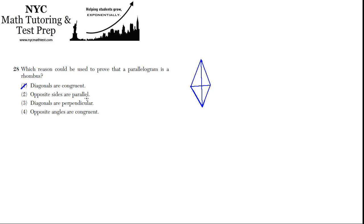What kind of a rhombus has congruent diagonals? A square. A square is a very special rhombus where the diagonals are equal. But not all rhombuses are squares, so that doesn't necessarily need to be true.